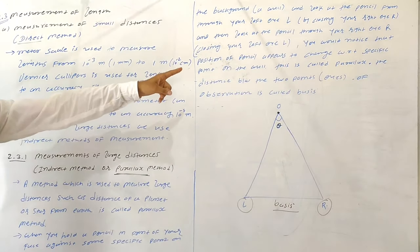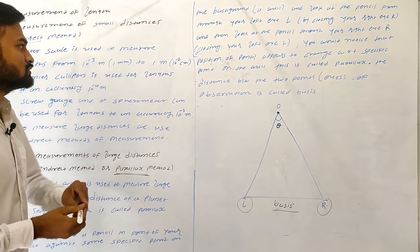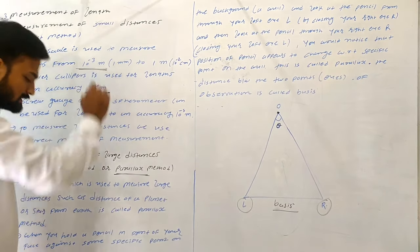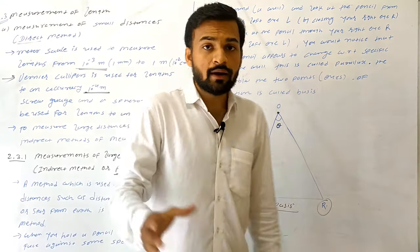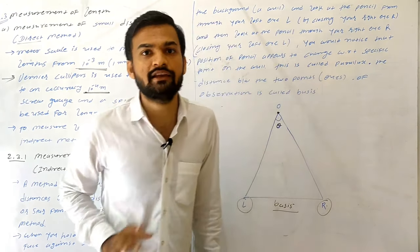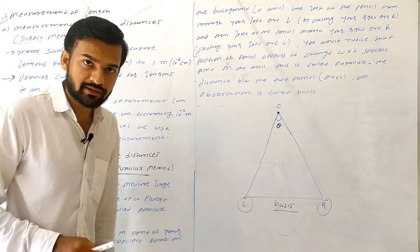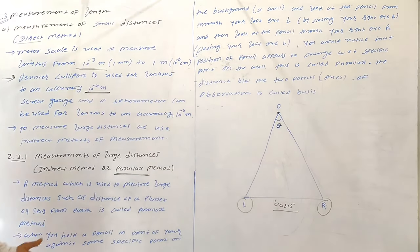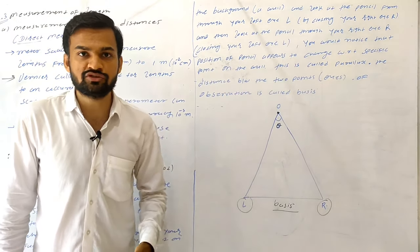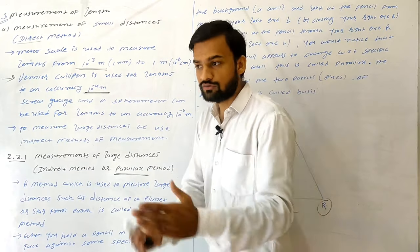Here in the figure, Vernier calipers is shown. Vernier calipers is used for measurement of length to an accuracy of 10⁻⁴ meter. So Vernier calipers can measure distances up to 10⁻⁴ meter — very small distances accurately.